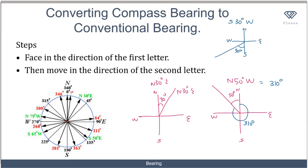From south I move 30 degrees toward the west, giving me South 30 degrees West. To convert to a conventional bearing, I must measure all angles from the north toward that line. I know the small angle here is 30 degrees, and the angle on a straight line from north to south is 180 degrees. So the total angle is 180 plus 30, which equals 210 degrees. South 30 degrees West is the same as a conventional bearing of 210 degrees.